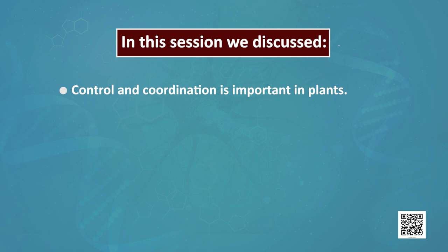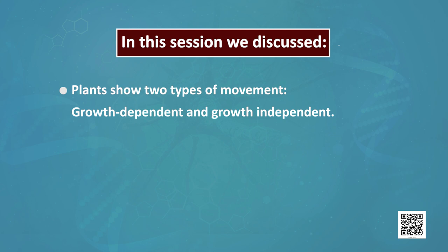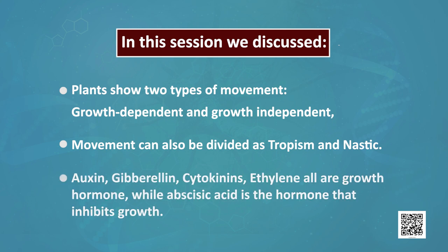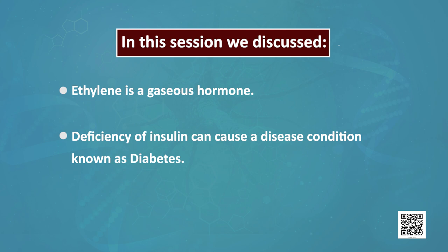To summarize: control and coordination is also important in plants. Animals have a nervous system and endocrine system, while plants have only a hormonal system. Plants show two types of movement: growth-dependent and growth-independent. Movement is also divided into tropism and nastic movement. Auxin, gibberellin, cytokinins, and ethylene are all growth hormones, while abscisic acid is the hormone that inhibits growth. Ethylene is a gaseous hormone. Deficiency of insulin can cause the disease condition known as diabetes.